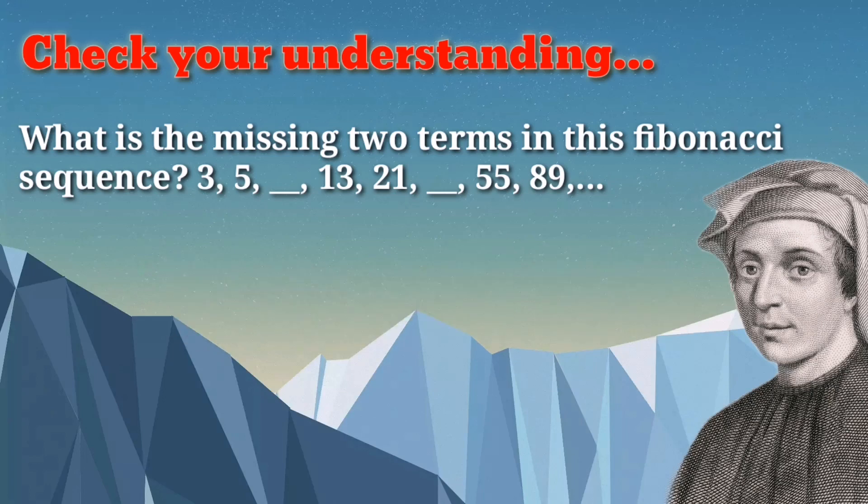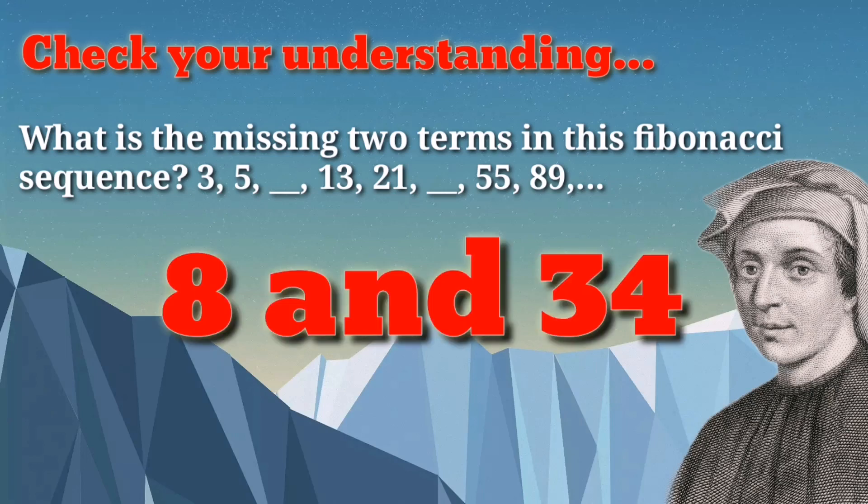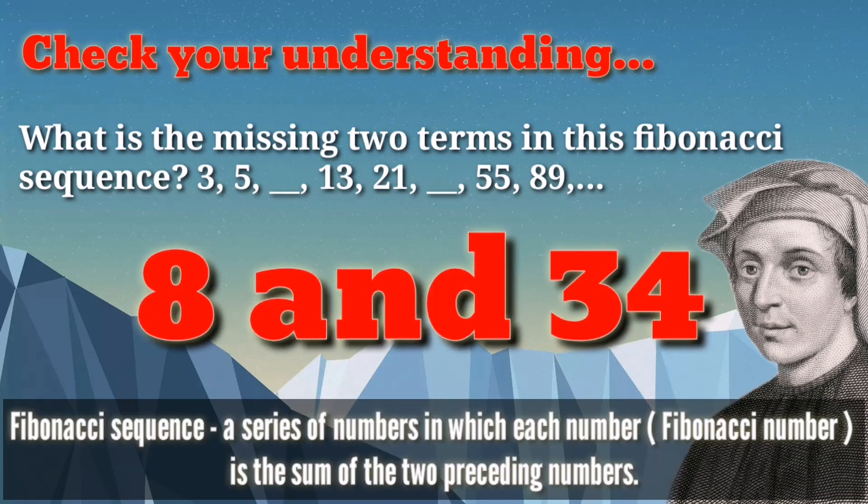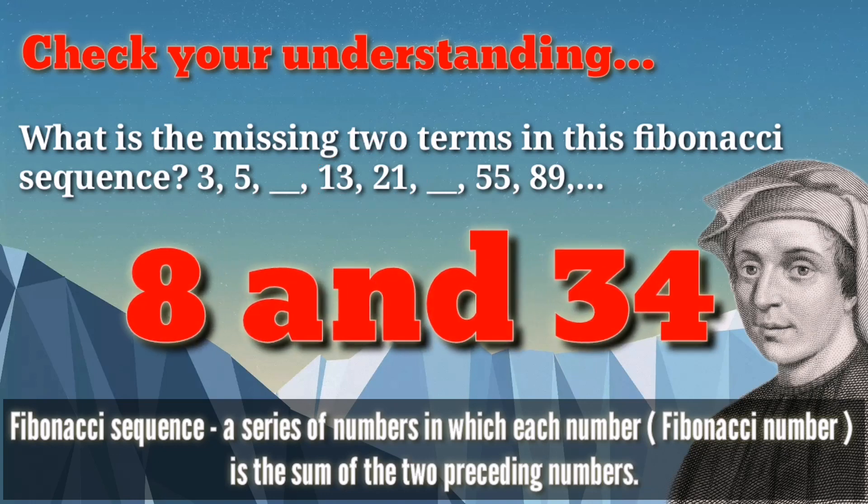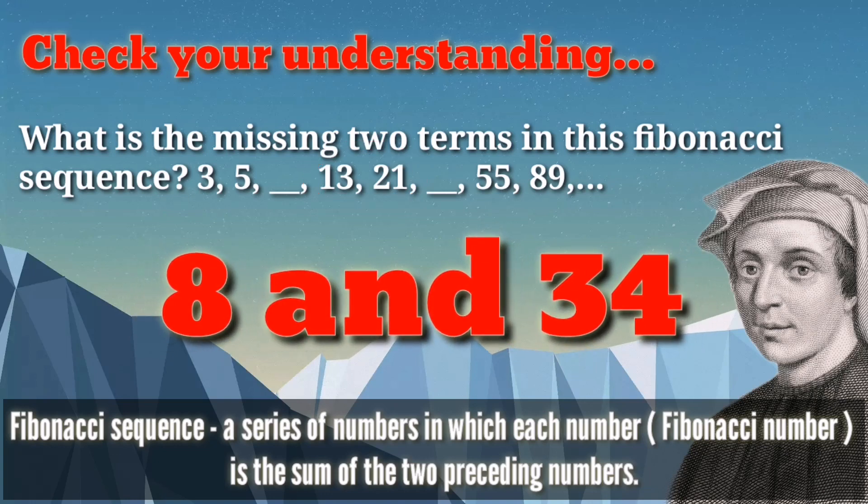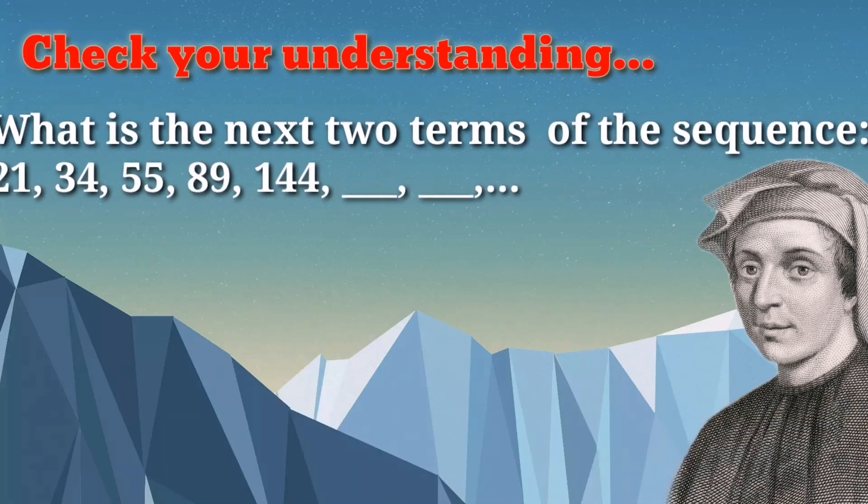For those who ask how and why, here it is. Again, the Fibonacci sequence, we define as a series of numbers in which each number is the sum of the two preceding numbers. For example, the sum of 3 and 5 is 8, while the sum of 13 and 21 is 34. That's why the missing two terms is 8 and 34. Got it?